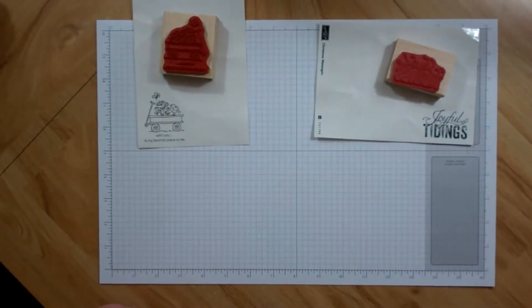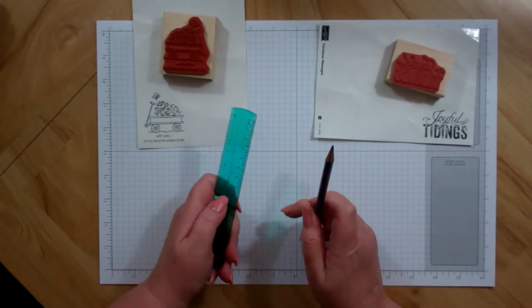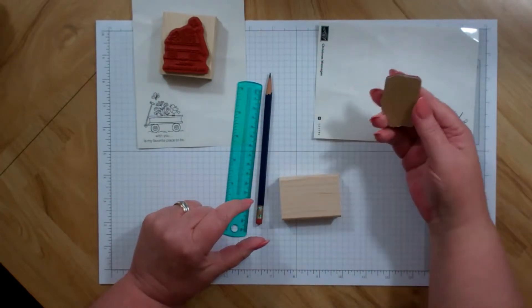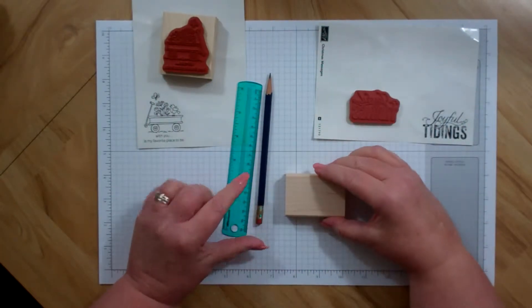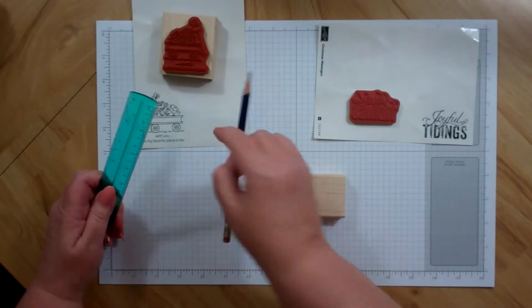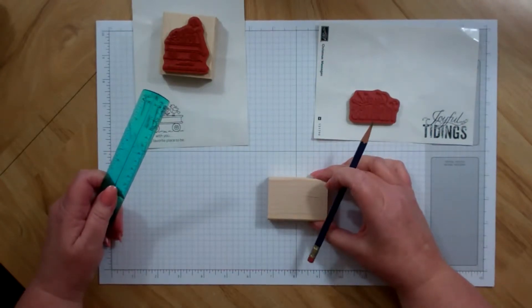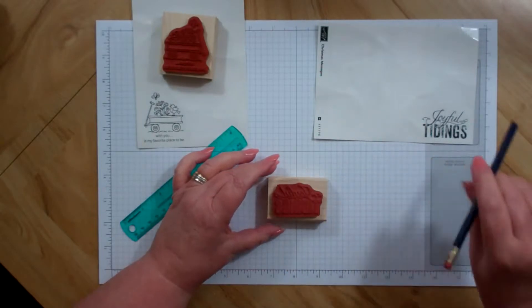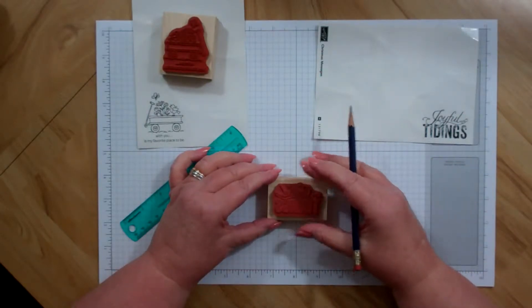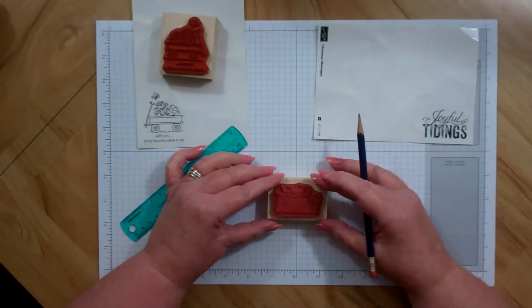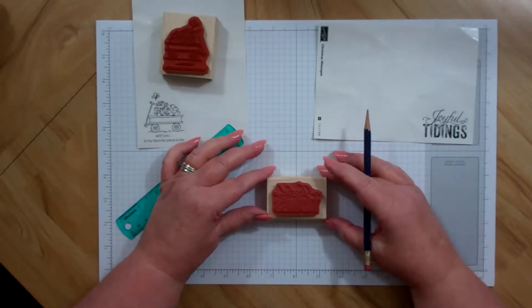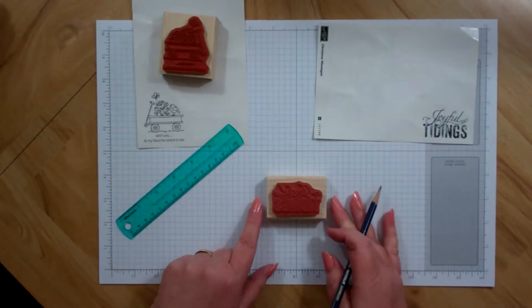Okay, the tools that you need are a ruler and a pencil. Now, the wood mount stamps, of course, you have to mount them yourself, which is why you get to line them up. I use the grid paper, and I set my stamp on the wood block after getting the wood block lined up in a straight line.